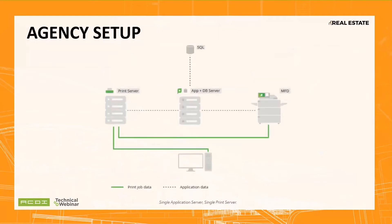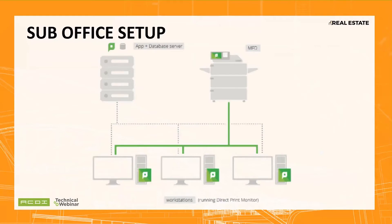A smaller real estate agency might have PaperCut residing on a server that hosts the print queues, with workstations printing through the server so PaperCut can track the activity. An RDBMS is always available, but you'll probably not encounter one unless they want to run external reporting systems — the built-in Apache Derby database should be fine in almost all configurations like this. For the sub-office or very small agency, we'll run PaperCut on a small computer somewhere in the facility. You might even want to look at ACDI's Print Hub, a turnkey solution ideal for this type of environment.